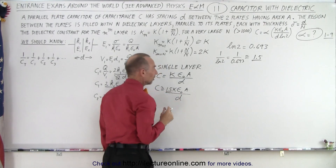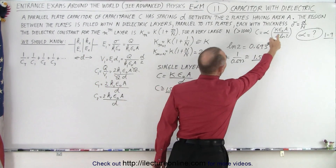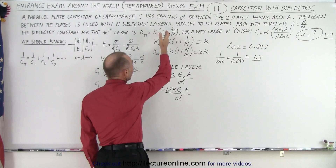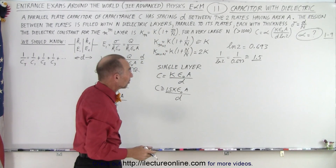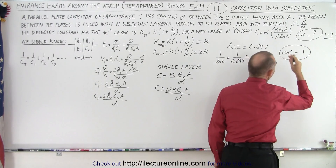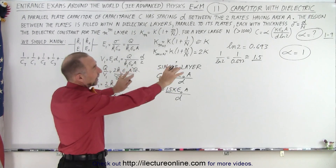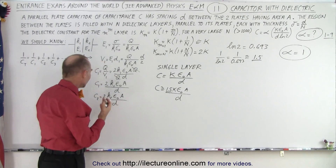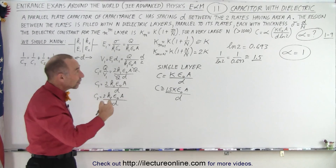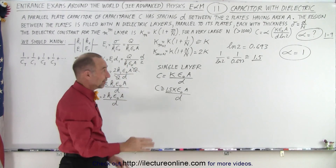Notice that 1 over the natural log of 2 is about 1.5, which matches the expression for capacitance using the average dielectric constant of 1.5K. This means nothing extra is needed in front — no additional multiplier — so alpha equals 1. That is indeed the correct answer. If you were taking the test, you could knock that out in three minutes and move on.